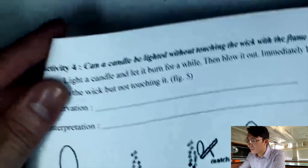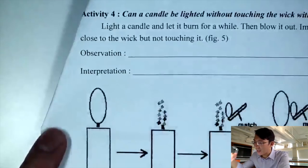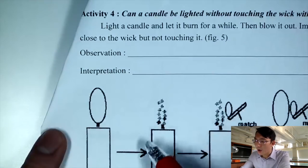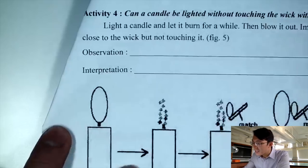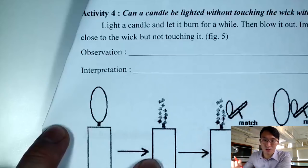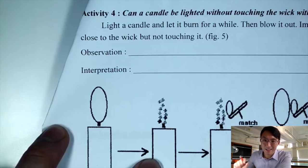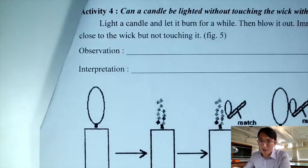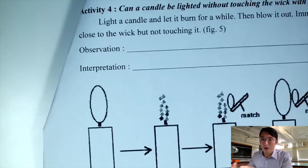The last one is very magical. We first light up a candle and prepare a burning splint — we don't use a match, we use a burning splint. Then we blow out the flame and immediately place the burning splint close to the wick, but never touching the wick. We want to find out if it is possible to relight the candle without the flame actually touching the wick. I will now move the camera to the setup for the demonstration.